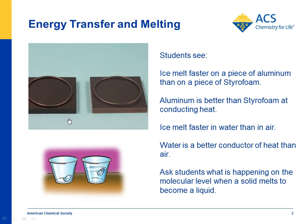Aluminum is a much better conductor of heat than plastic is. And the same is true with the experiment that students do. If they have a piece of ice in room temperature air and a piece of ice in room temperature water, the water is much more massive than the air — there's just more matter, so there's more total energy. It's sort of like if you had a drop of hot water on your hand, it wouldn't feel very hot. But if you had a whole lot of hot water on your hand, it would burn. And the other reason is that water is a better conductor of that energy than air is.